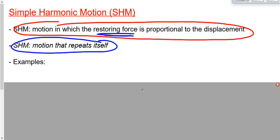At some point, the metal stops moving one way and starts moving the other way — back and forth, back and forth. That's simple harmonic motion. Motion repeats itself. Why? Because the restoring force is proportional to the displacement.